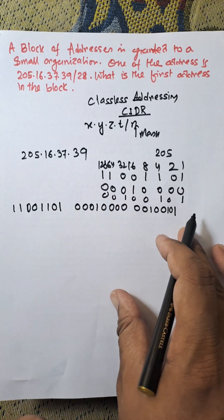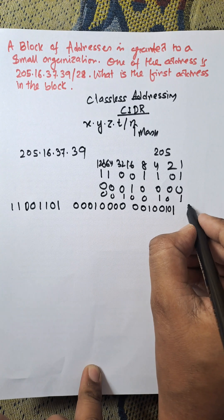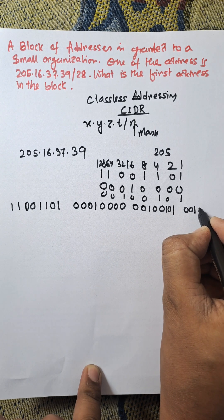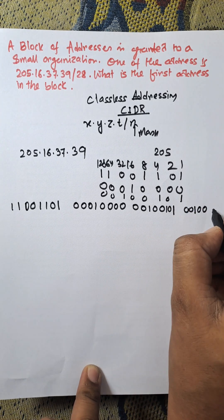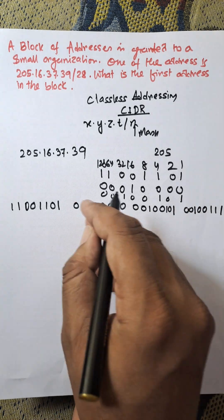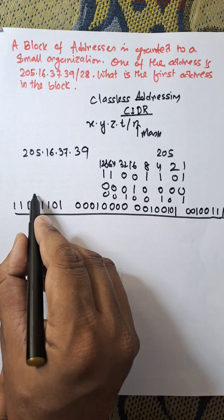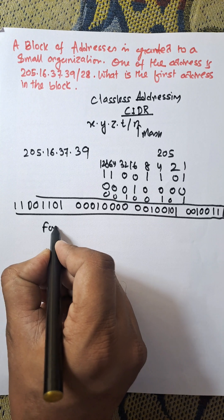And for 39, that is 32 and 7, which is 32, 4, 2, and 1. So that's 00100111. So this is the binary equivalent of the given IP address.